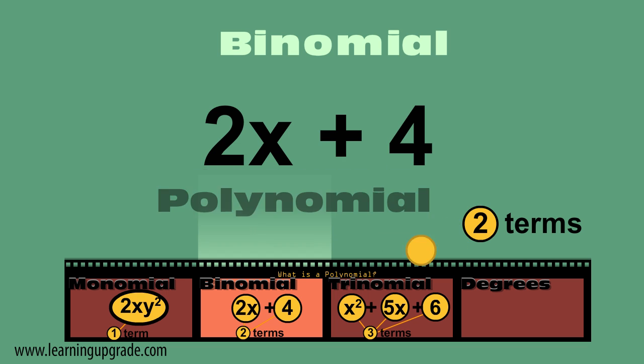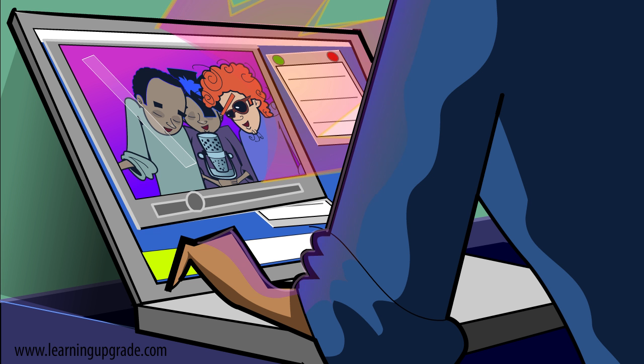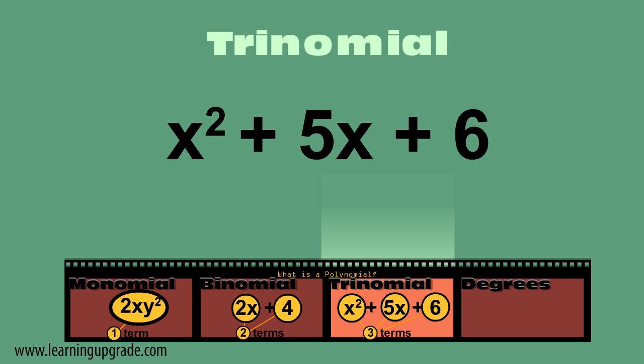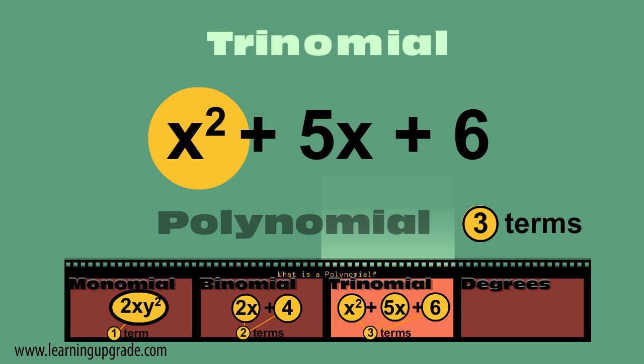What's a trinomial? It's a polynomial with three terms. x squared plus 5x plus 6, three terms. A trinomial.